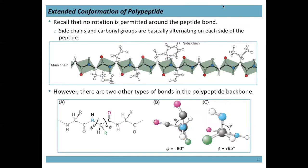Around the peptide bond, the structure is planar and typically appears in the trans conformation, meaning the carbonyl and the H off the nitrogen are in opposite directions. We do get rotation around those bonds at the C-alpha. We can rotate around the C-alpha to the nitrogen bond and the C-alpha to the carbonyl bond. These are named the phi and psi angles. Phi is from the C-alpha to the nitrogen, and psi is from the C-alpha to the carbonyl carbon.